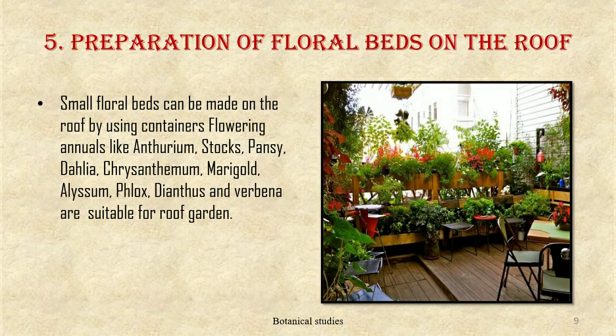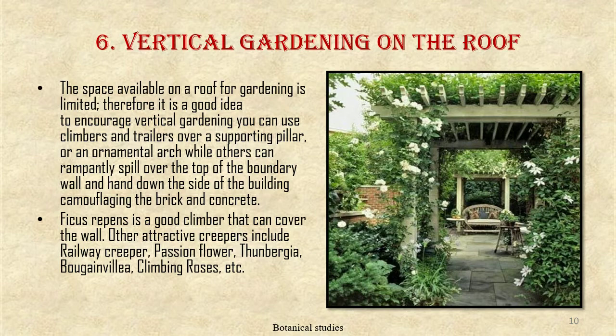Fifth, preparation of floral beds — small floral beds can be made on the roof by using containers. Flowering annuals like anthurium, stocks, pansy, dahlia, chrysanthemum, marigold, alyssum, phlox, dianthus, and verbena are suitable for a roof garden.